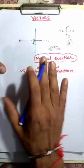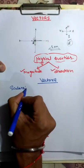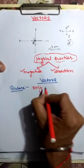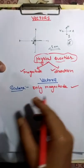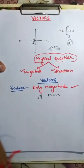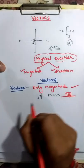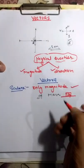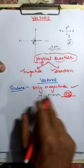Contrary to that, scalars are those physical quantities which need only magnitude. For example, consider mass — you say 1 kg of an apple. You don't specify its direction, so only magnitude is enough to describe it. Such quantities are known as scalars.